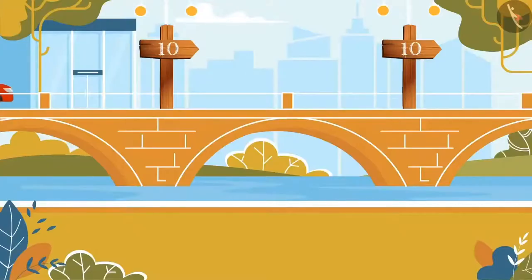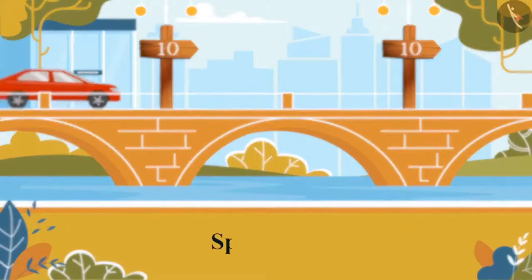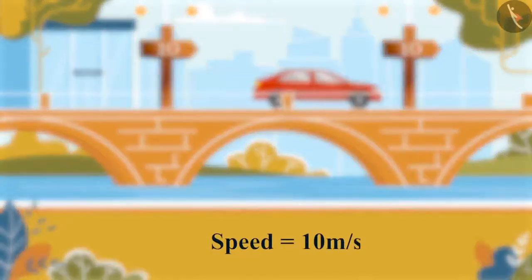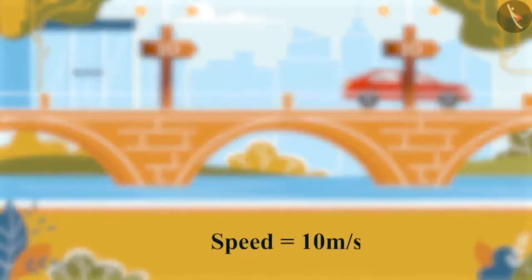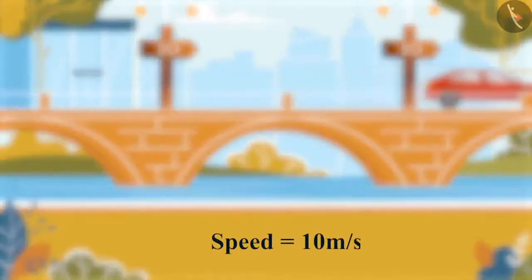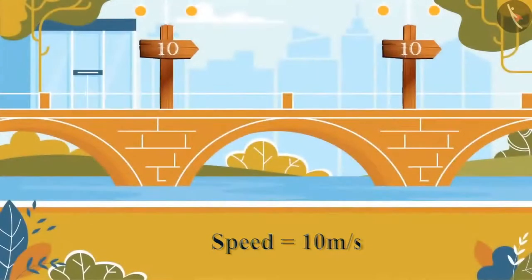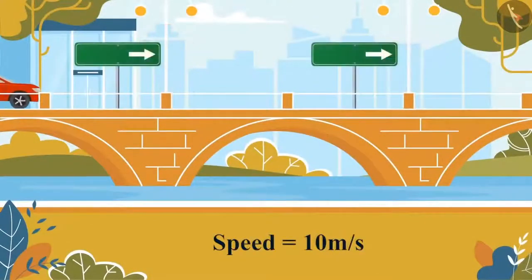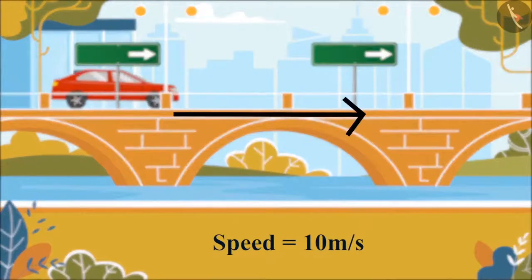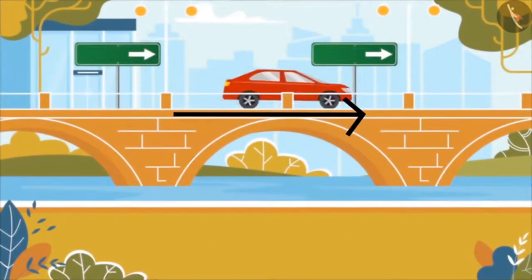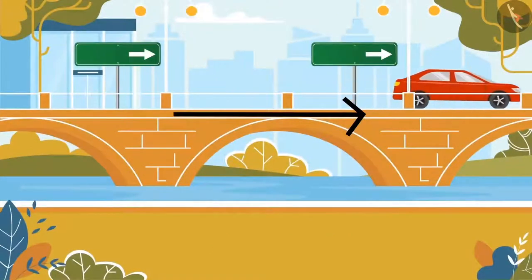Let's start by considering an object moving at a certain speed, let's say 10 meters per second. Now, along with the speed, if we specify the direction of motion also, then the whole quantity is known as velocity.